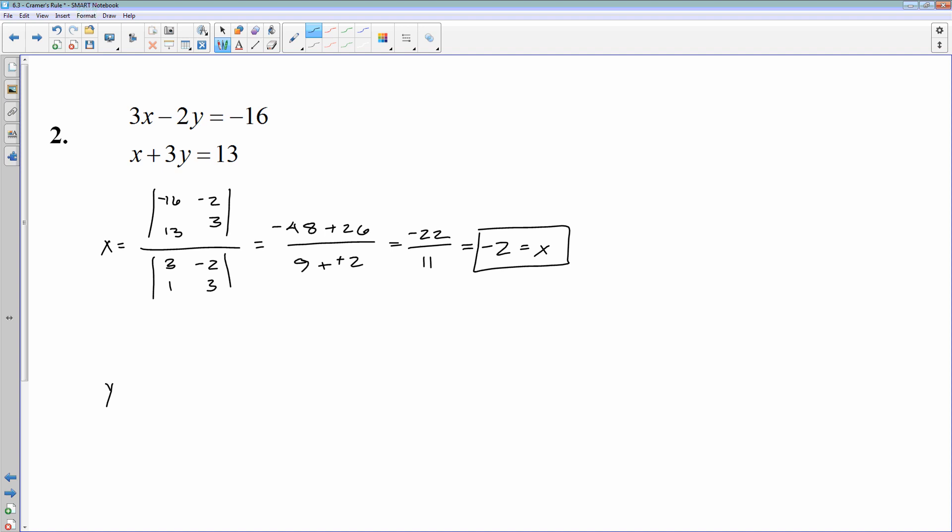Solve for Y. Same thing. Bottom matrix, 3, negative 2, 1, 3. Those are just the coefficients as they were. Then on top, since I'm solving for Y, the X coefficients stay the same, but we replace Y with negative 16 and 13. And we'll work that out. 39, 3 times 13. Minus 1 times negative 16, which will make that plus. All over 3 times 3. Minus 1 times negative 2. That's going to give me 39 plus 16. 9 plus 2 is 11. 55 divided by 11 is 5. There's my Y, which means these two lines intersect at the point negative 2, 5.